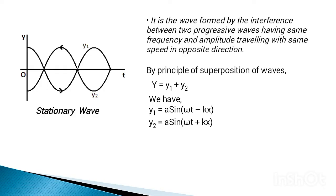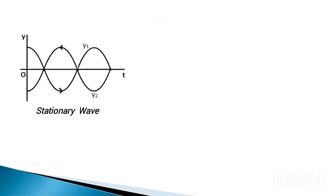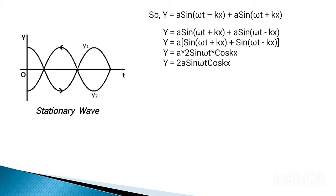The equations of the progressive waves are: Y1 equals A sine(ωt minus kx), where the negative sign is because the wave travels from left to right. The equation for the reflected wave is Y2 equals A sine(ωt plus kx). Substituting into Y equals Y1 plus Y2, we get Y equals A sine(ωt minus kx) plus A sine(ωt plus kx), which on solving gives Y equals 2A sine(ωt) cos(kx).